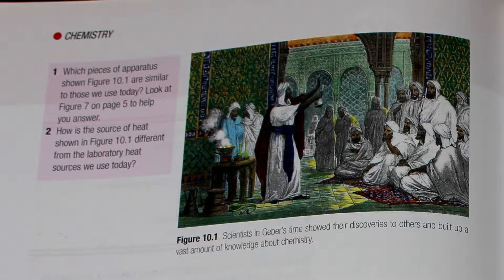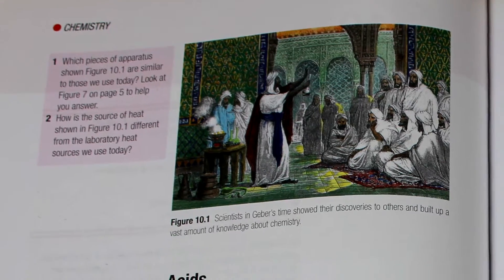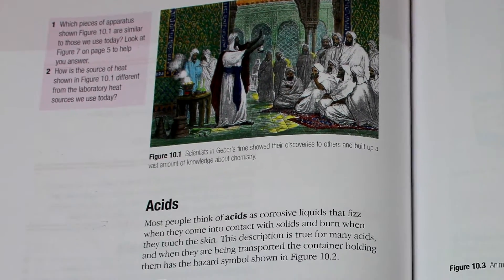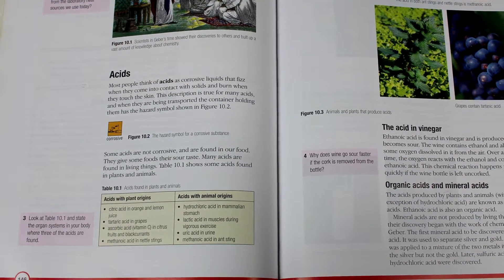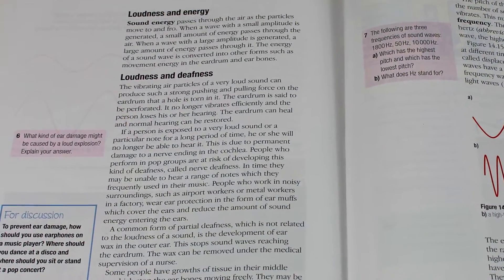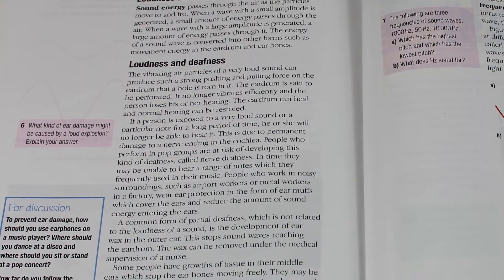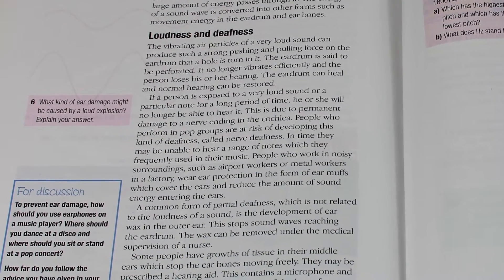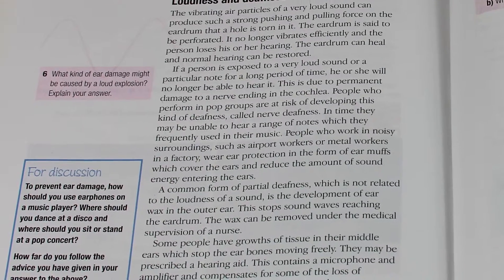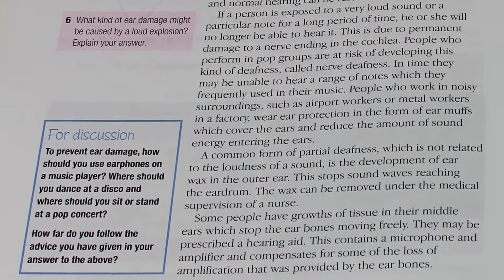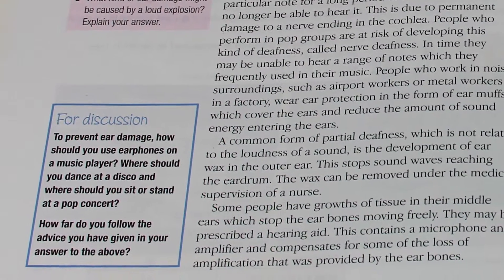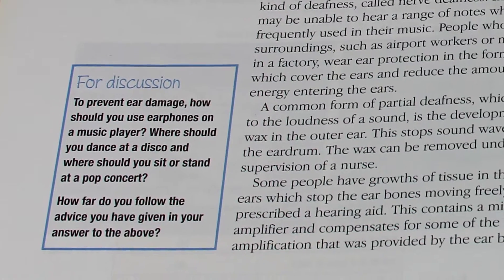In this example, I have started by using a picture as a source for questions 1 and 2. Then as the students read on, they can stop and answer questions 3 and 4. I would also stop and set a question for groups of students to discuss and then report back to the class. I have included these types of questions in boxes entitled 'For Discussion'.